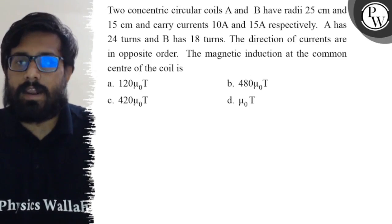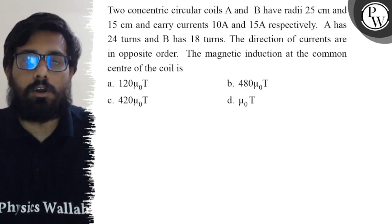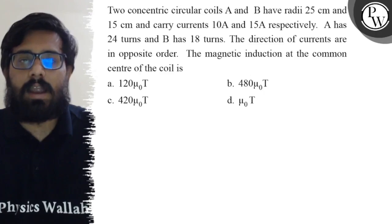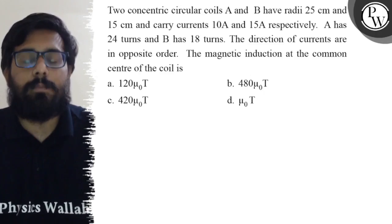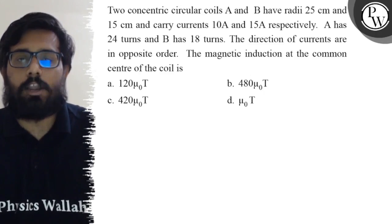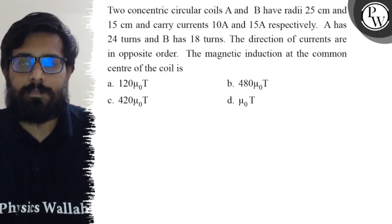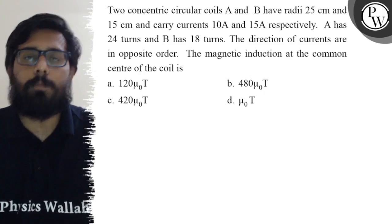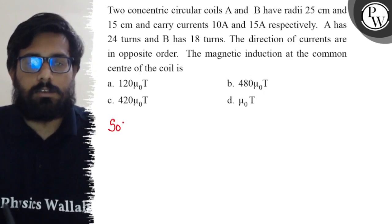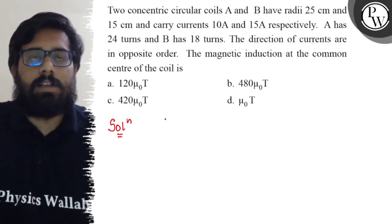The direction of the currents are in opposite order. The magnetic induction at the common center of the coil is: first option is 120 mu naught tesla, second option is 480 mu naught tesla, third option is 420 mu naught tesla, and fourth option is mu naught tesla.